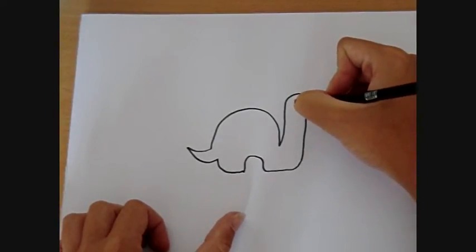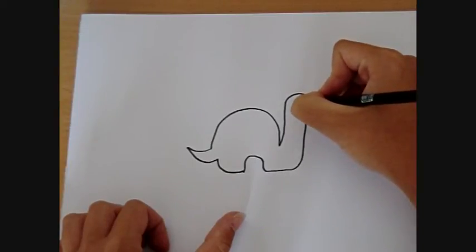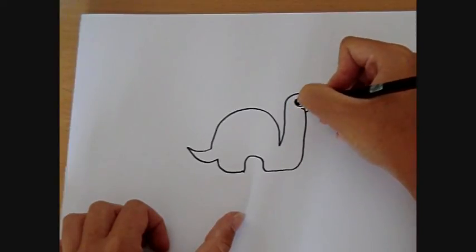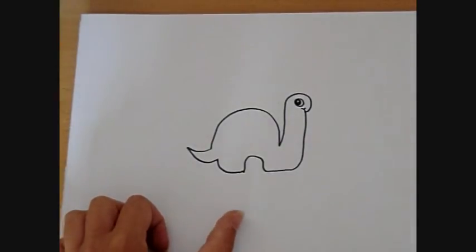And then you want to draw in his eye. So just draw in a basic circle for that. And draw in another circle here. And color in this circle. Just leave one tiny little bit of white like that. And then we're going to get into some detailing.